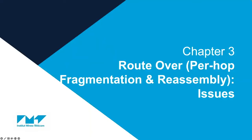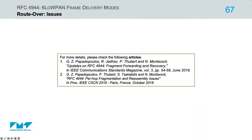I will proceed to chapter 3, which details the issues when route over mode is employed. 6LoWPAN employs a frame delivery mechanism that is ill-suited for route over mode, where reassembly and fragmentation of the entire IPv6 packet is required at every IPv6 hop along the multi-hop path.